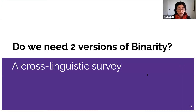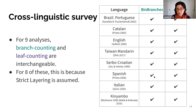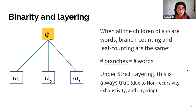Do we really need two versions of binarity? We start with a cross-linguistic survey. We collected about 17 analyses that employed binarity as a constraint: ten defined binarity in leaf counting terms, five used branch counting terms, and two employed both. For nine of them, branch counting and leaf counting were interchangeable. Here's what we found: for eight of these languages, the two are interchangeable because they assume strict layering. When all the children of a phi are words, counting the branches and counting the leaves are the same.